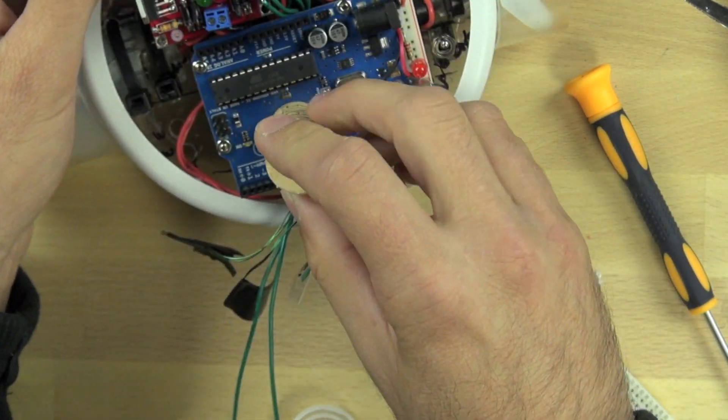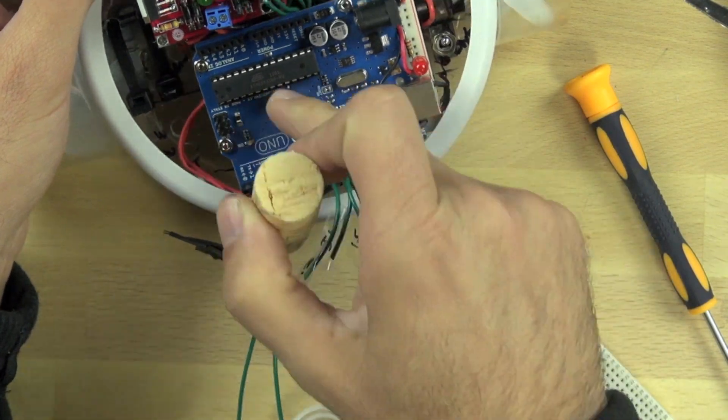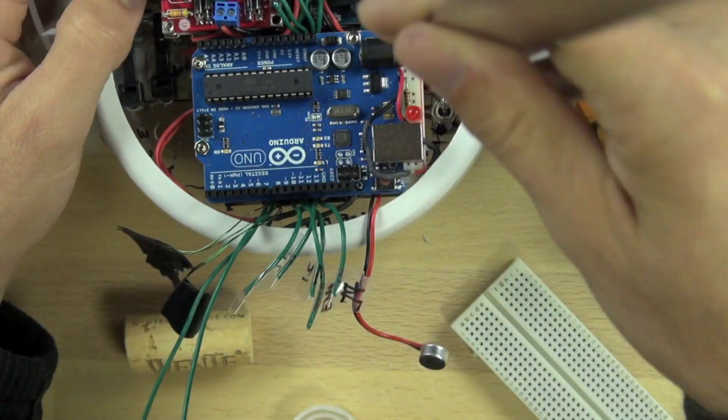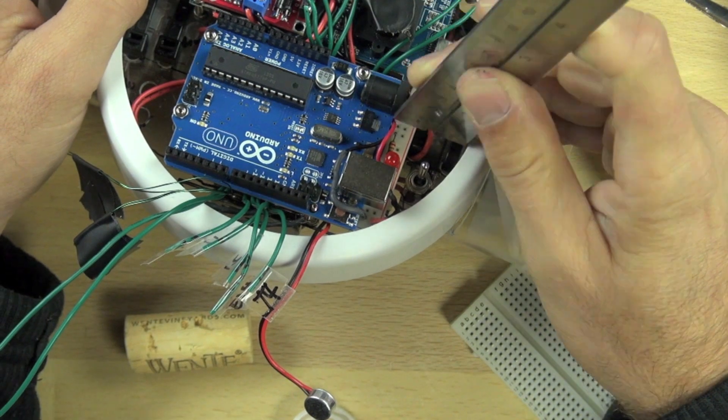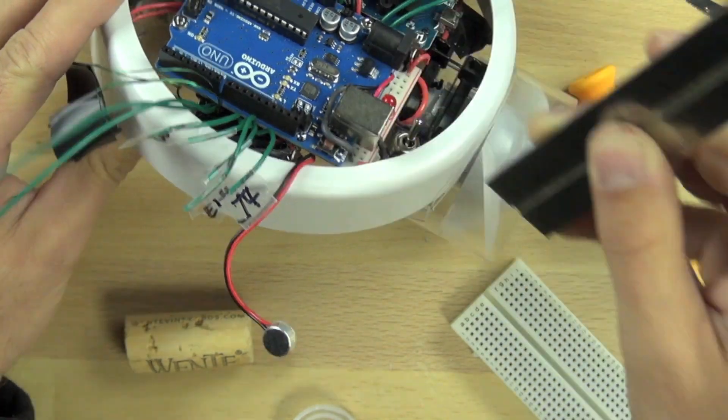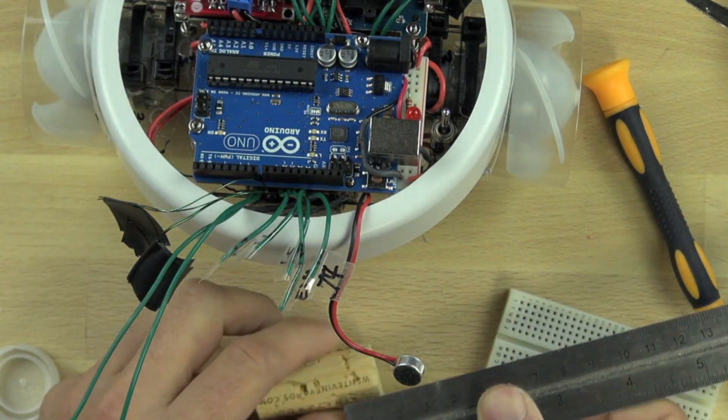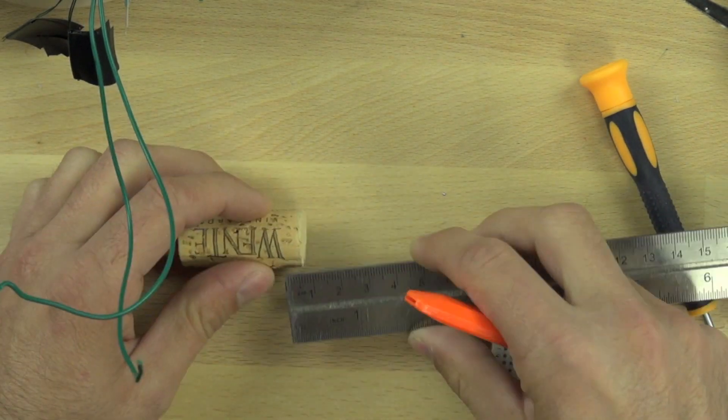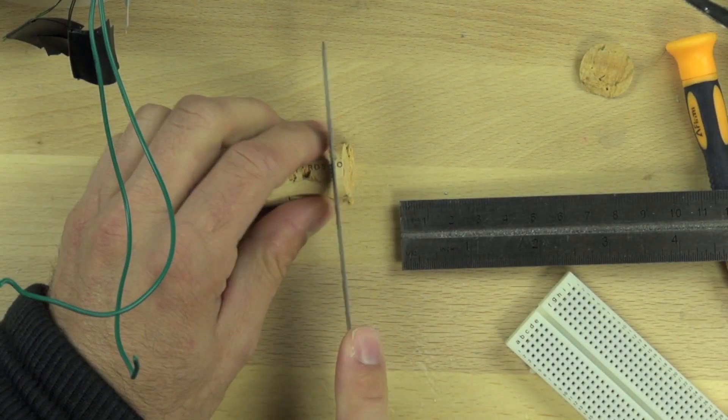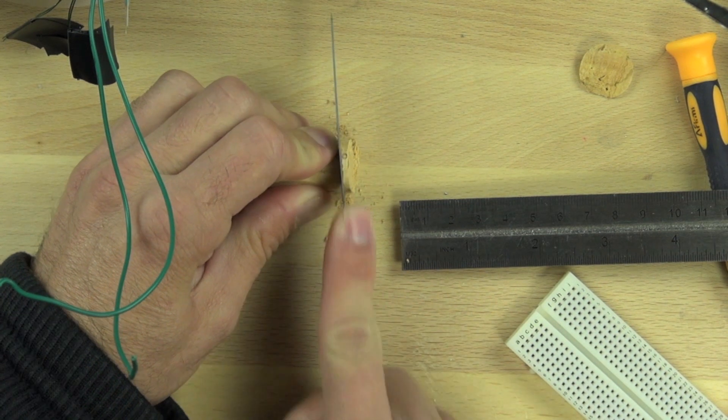The cork is non-conductive and easy to cut, so it's a good way to connect the board. We need to find the height of our power connector and USB connector, and they happen to be the same height, so we can cut our wine cork down to the right size.